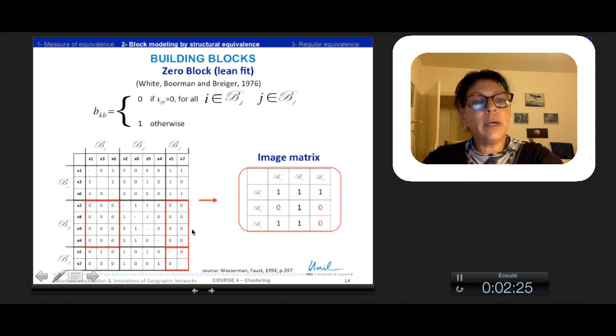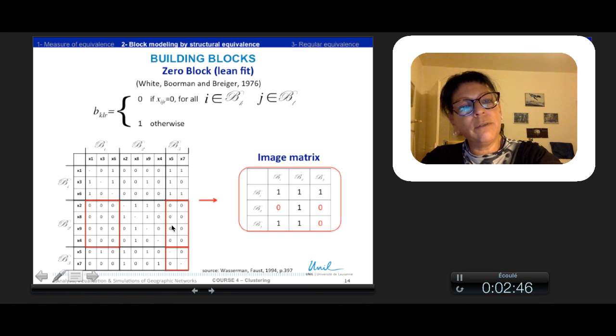The zero block criteria defines a relation 0 between two positions only if there are absolutely no relations between individuals of these two positions, otherwise it is 1. The focus on zero block is structurally important because of the expectation that while one blocks might not be completely filled with 1s, blocks that contain no observed ties, like these ones which we put 0, indicate important structural patterns.